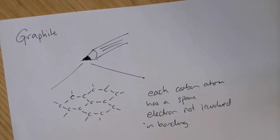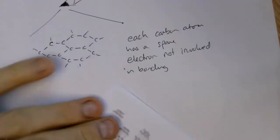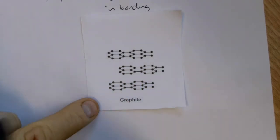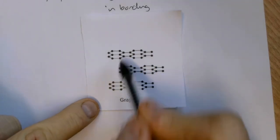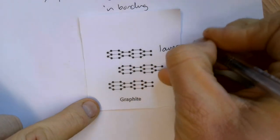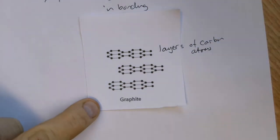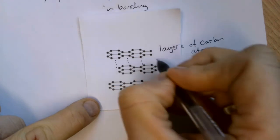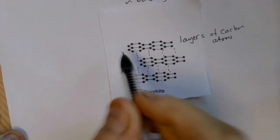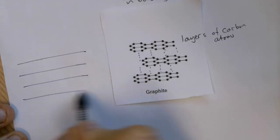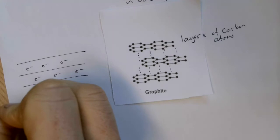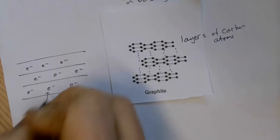It's quite a difficult structure to draw, but here's graphite from a textbook. These black dots represent carbon atoms, and if we look at the carbon atoms in the middle, each one is bonded to three others. We've got layers of carbon atoms, and in between the layers there are weak forces. Also between the layers we've got a spare — or delocalized — electron. So we have delocalized electrons between the layers.